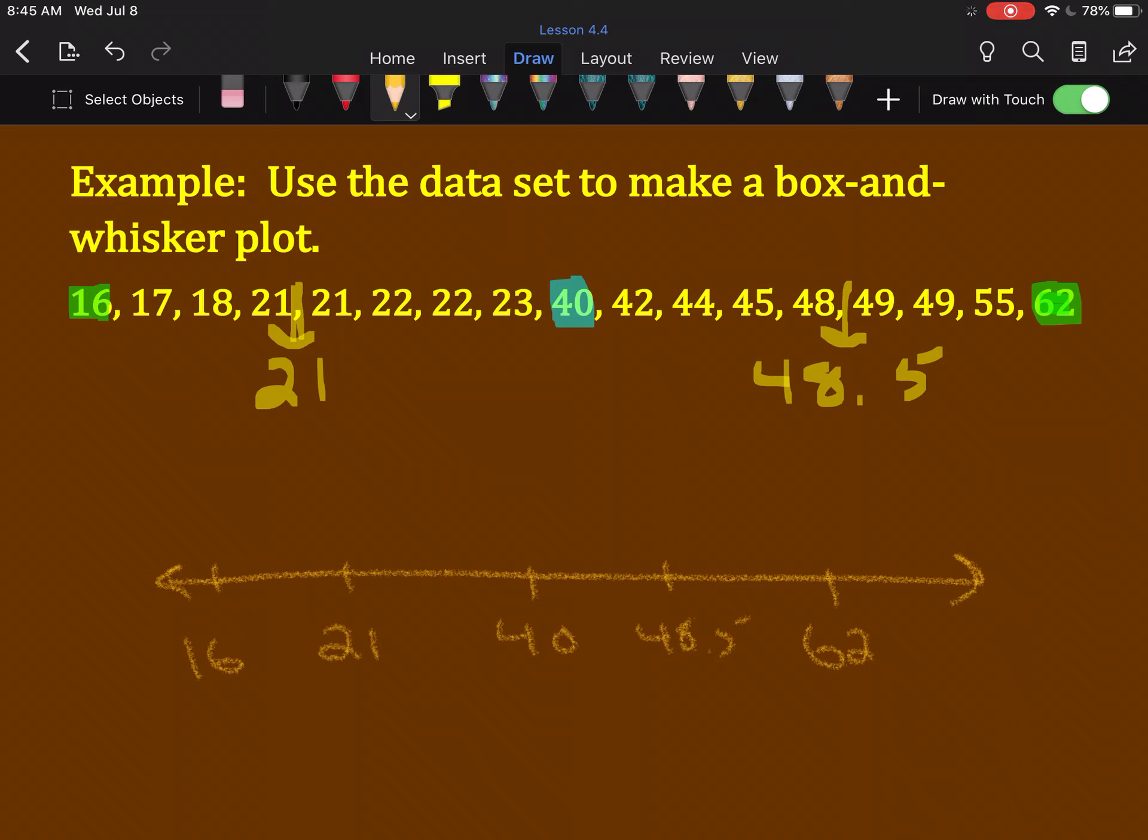Above the low and high numbers, I'm going to put dots. Above the three numbers in the middle, the two quartiles in the median, I'm going to put bars. I will connect the tops and bottoms of the bars to make our box and attach the dots with whiskers.